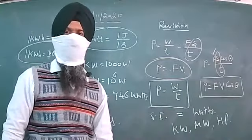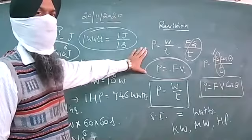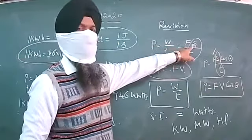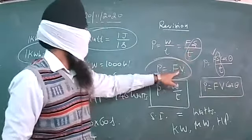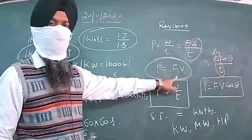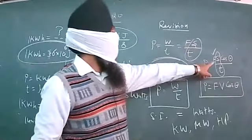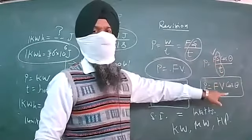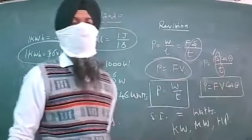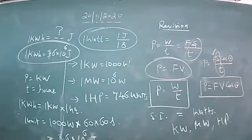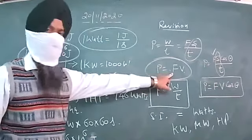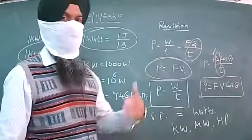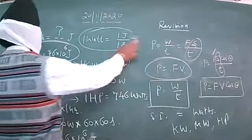So these are three possible expressions for power. Power of a source is defined as the rate at which work is done. Work done equals force into distance covered upon time taken; distance upon time equals velocity, so power equals force into velocity. If force is applied at an angle theta, then power equals F into V into cosine of theta. We can relate electric or mechanical power with force, velocity, work done, or time, along with angle theta.